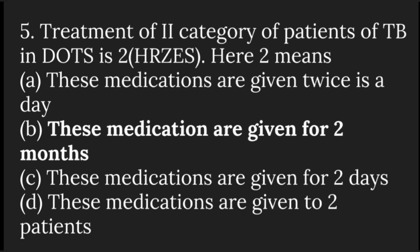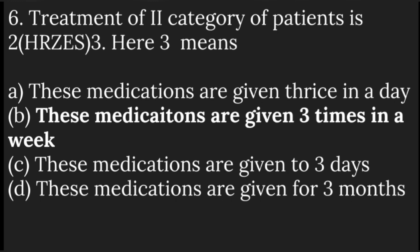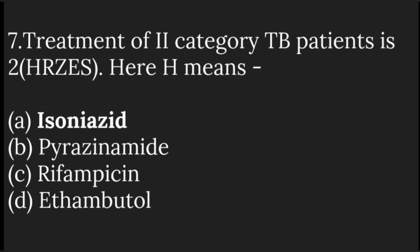The treatment of the second category TB patient in DOTS is 2HRZES. Here, 'two' means these medications are given for two months, and 'three' means these medications are given three times a week.